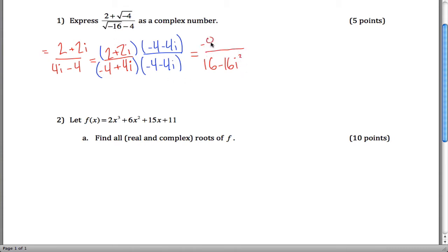And then on the top here, 2 times negative 4 is negative 8. 2 times negative 4i is negative 8i. 2i times negative 4 is negative 8i. So we end up with negative 8 minus 16i plus 8 divided by 16 plus 16.